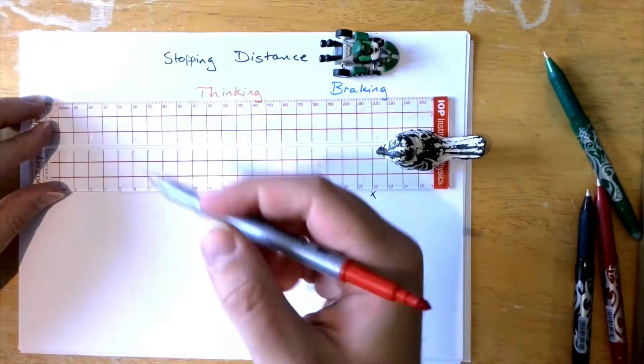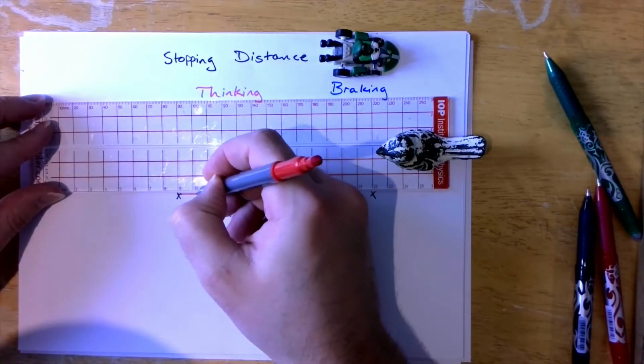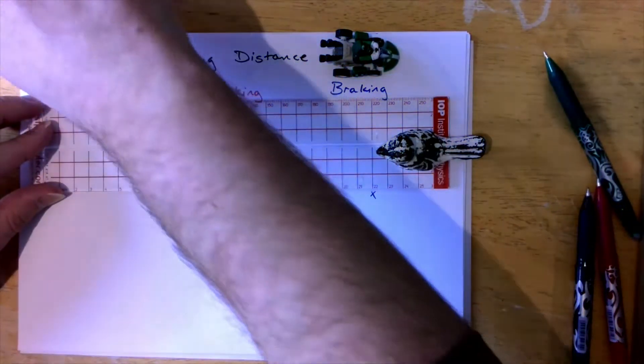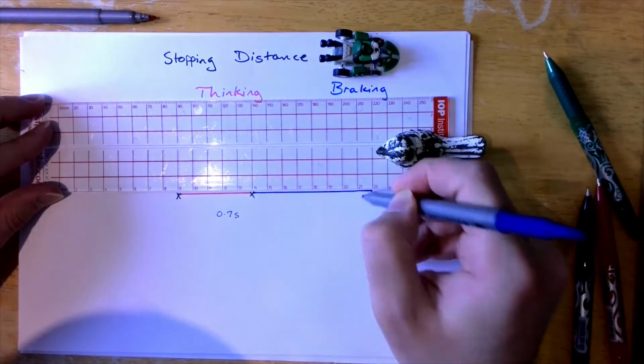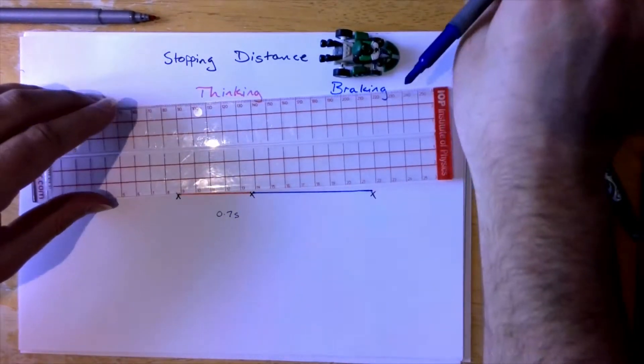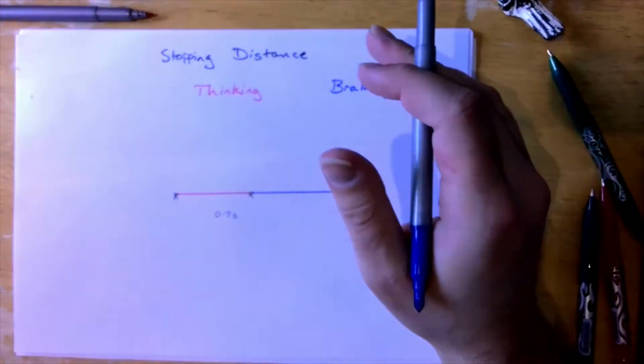Now none of you will be driving yet but this is something that I'd like you to remember for when you do get in your very own death machines, that we can affect the thinking distance and we can affect the braking distance.